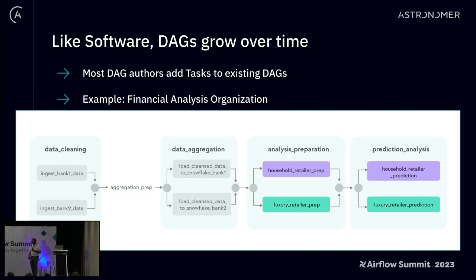One comment I've heard, including from some people in this room, is that datasets and micropipelines are really good ideas — great to use if we'd seen them when we initially started writing DAGs. But most software tends to grow over time, and how do you actually adopt this? A lot of this talk is really based on refactoring towards patterns, refactoring DAGs towards particular patterns.